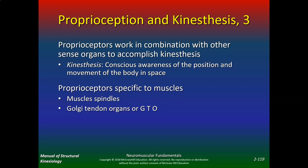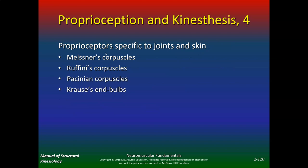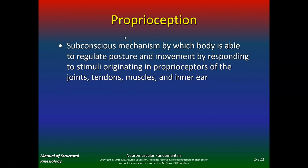What are the proprioceptors specific to muscles? You have muscle spindles and GTOs. There are also proprioceptors specific to joints and skin: Meissner's, Ruffini's, Pacinian, and Krause's end bulbs, each with different functions for what they detect. Proprioception is the subconscious mechanism by which the body regulates posture and movement by responding to stimuli originating in proprioceptors of the joints, tendons, muscles, and inner ear — so the ear plays a role as well.